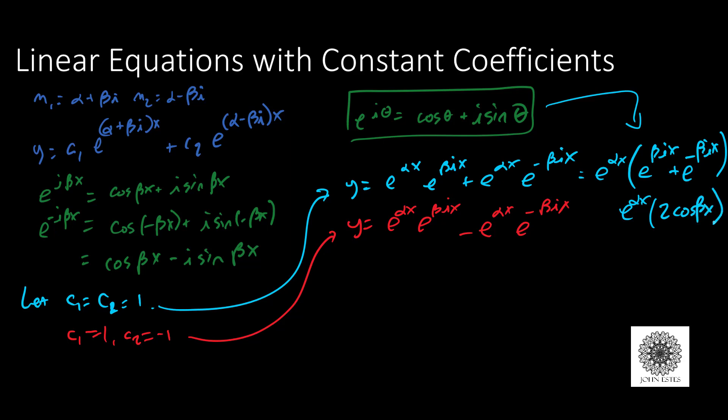When I'm adding those together, the cosines are going to add up to be 2 cosine beta x and the sines are going to subtract out.